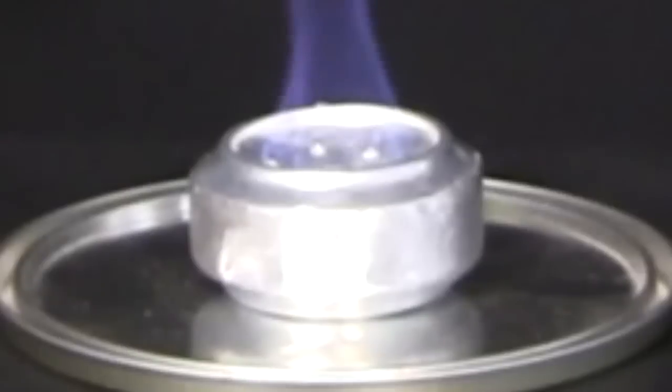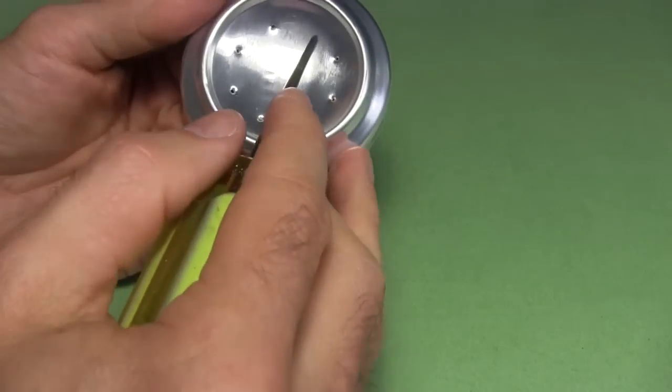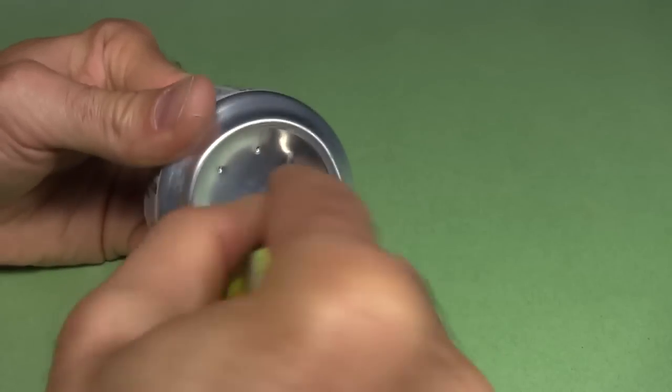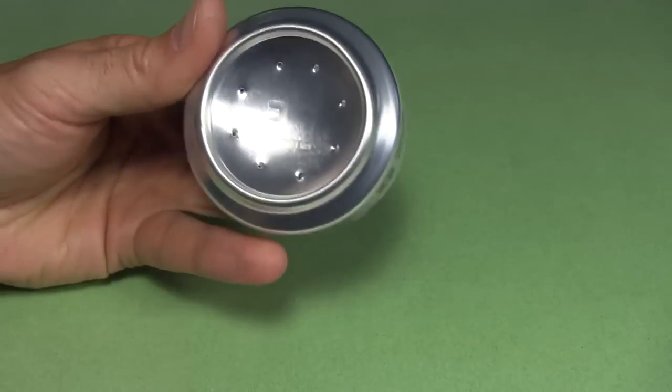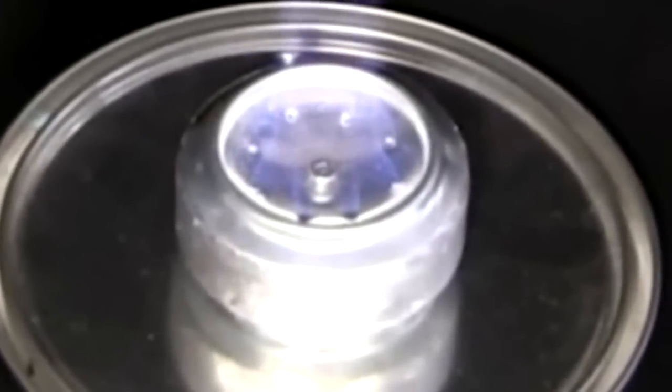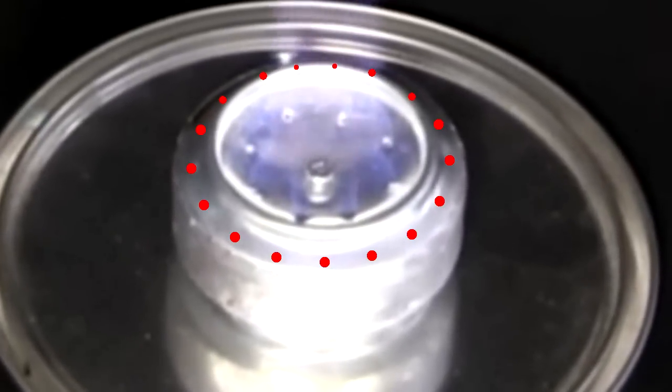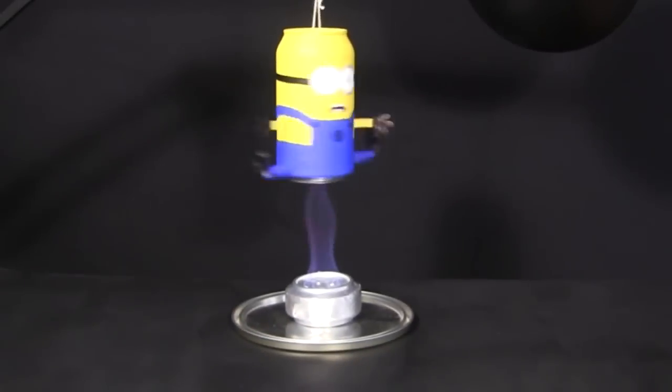I choose one of them to be the burner which the flames will come out of. I make eight holes evenly spaced around the center using a pointed tip tool. Anything similar will do. Most soda can alcohol stoves have small holes all around this edge instead but I want to make sure that my flame is in the middle.